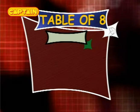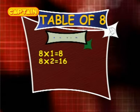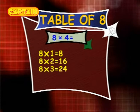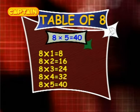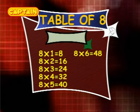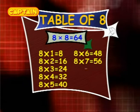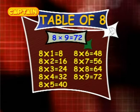Table of 8. 8×1 is 8. 8×2 is 16. 8×3 is 24. 8×4 is 32. 8×5 is 40. 8×6 is 48. 8×7 is 56. 8×8 is 64. 8×9 is 72. 8×10 is 80.